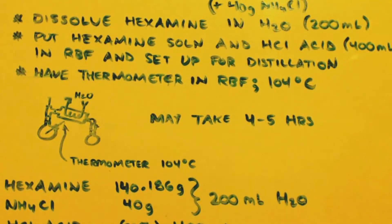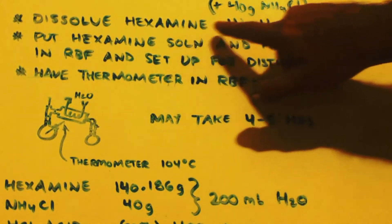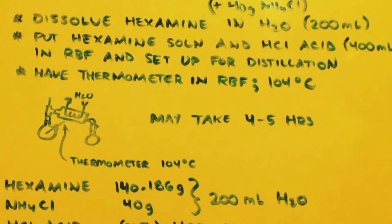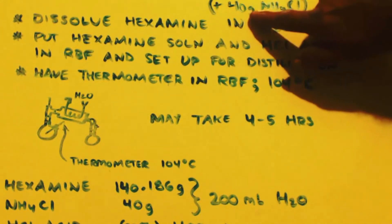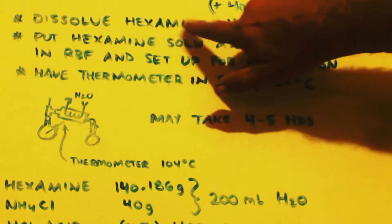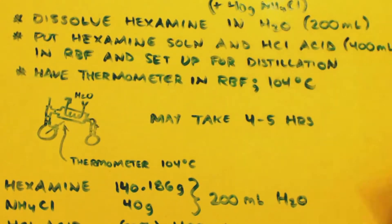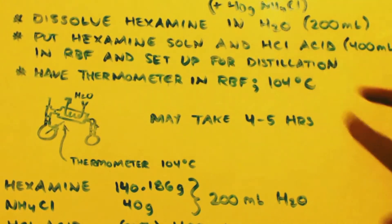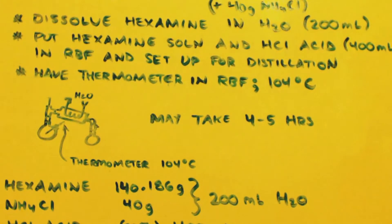So how do you make it? First, you're going to dissolve some hexamine and 40 grams of ammonium chloride — it's debatable whether to add it, but I think it's better if you do. Dissolve the hexamine and 40 grams of ammonium chloride into 200 milliliters of water; stir, heat, or wait until it's dissolved. Then put that hexamine solution and 400 milliliters of hydrochloric acid together in a round-bottom flask already set up for distillation.